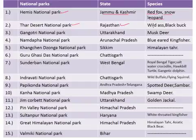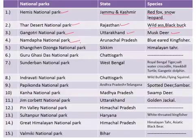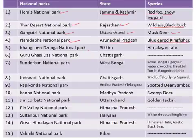Third is the Gangotri National Park, situated in the state of Uttarakhand, famous for the musk deer. Fourth is Namdapha National Park in the state of Arunachal Pradesh, famous for the blue-eared kingfisher. Fifth is the Kangchenjunga National Park situated in the state of Sikkim, famous for the Himalayan Thar.